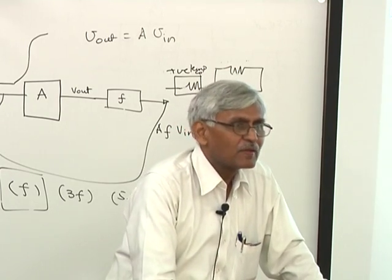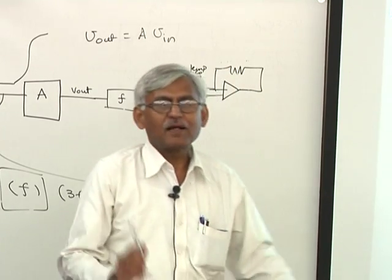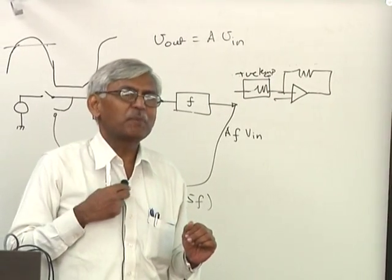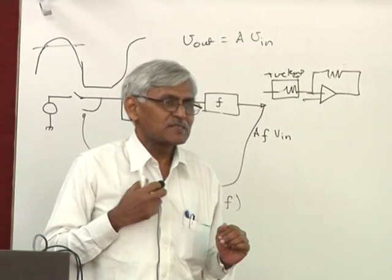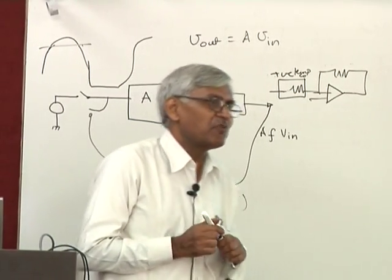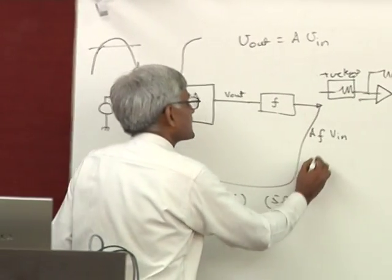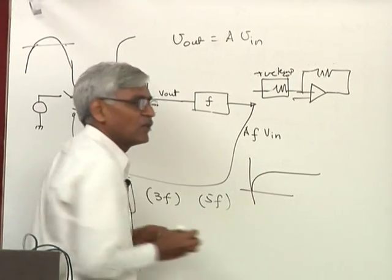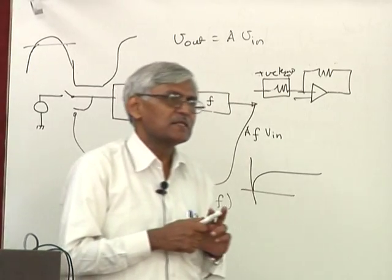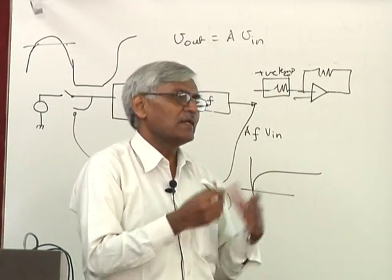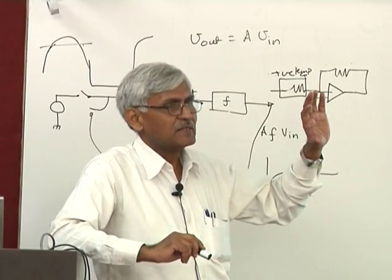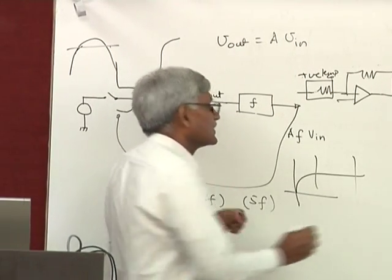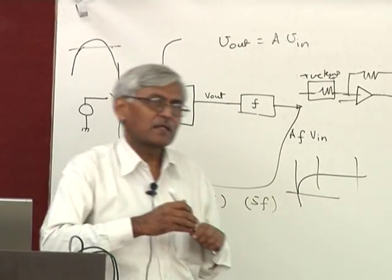We will stop here. I just did not get time to come to practical current sources, but this same characteristic of transistors can be used to make current sources — a fixed gate bias means that only in a specific regime of voltages will it act like a current source.